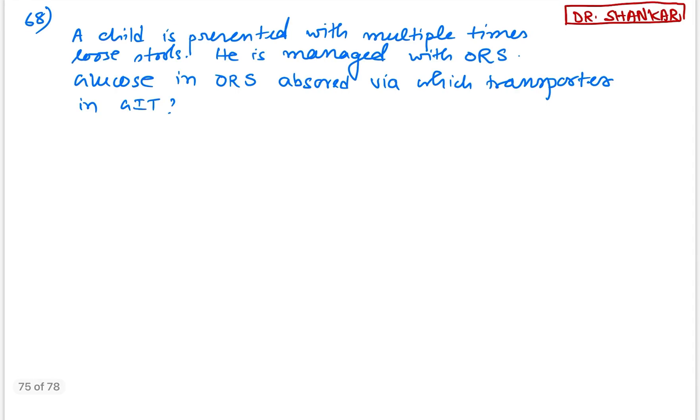Next, question number 68. A child is presented with multiple loose stools. He is managed with ORS. Glucose in the ORS is absorbed via which transporter in GIT? So glucose in the ORS is absorbed in the GIT via sodium-dependent glucose transporter.